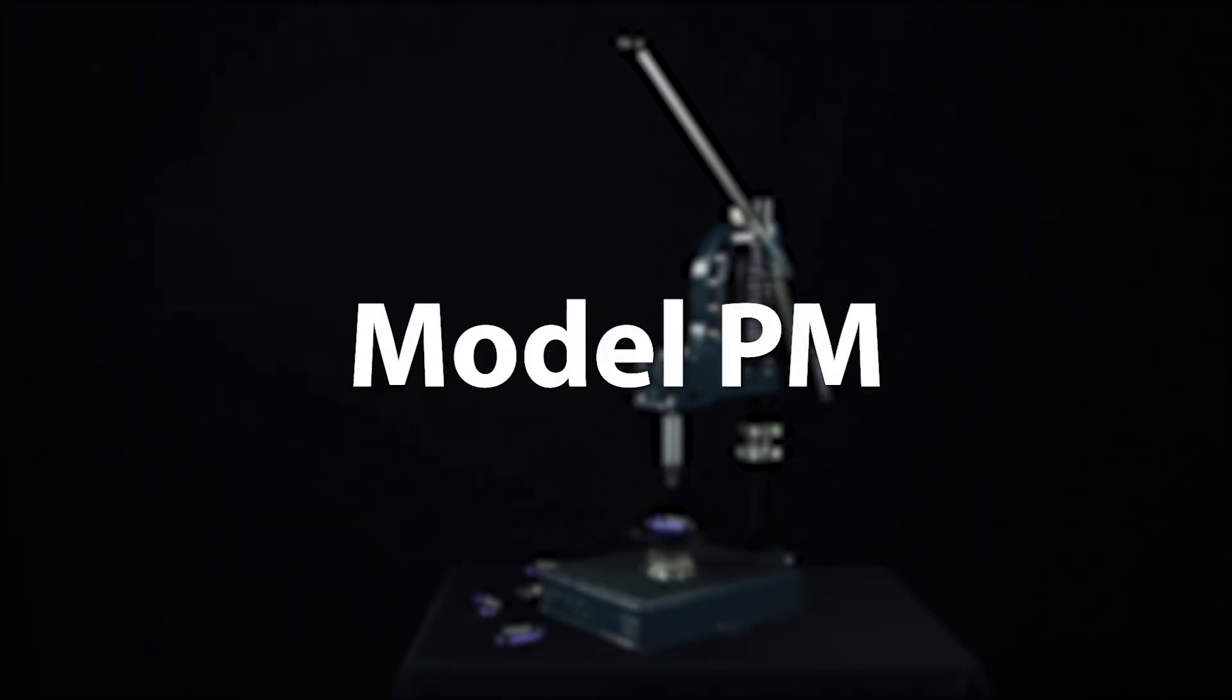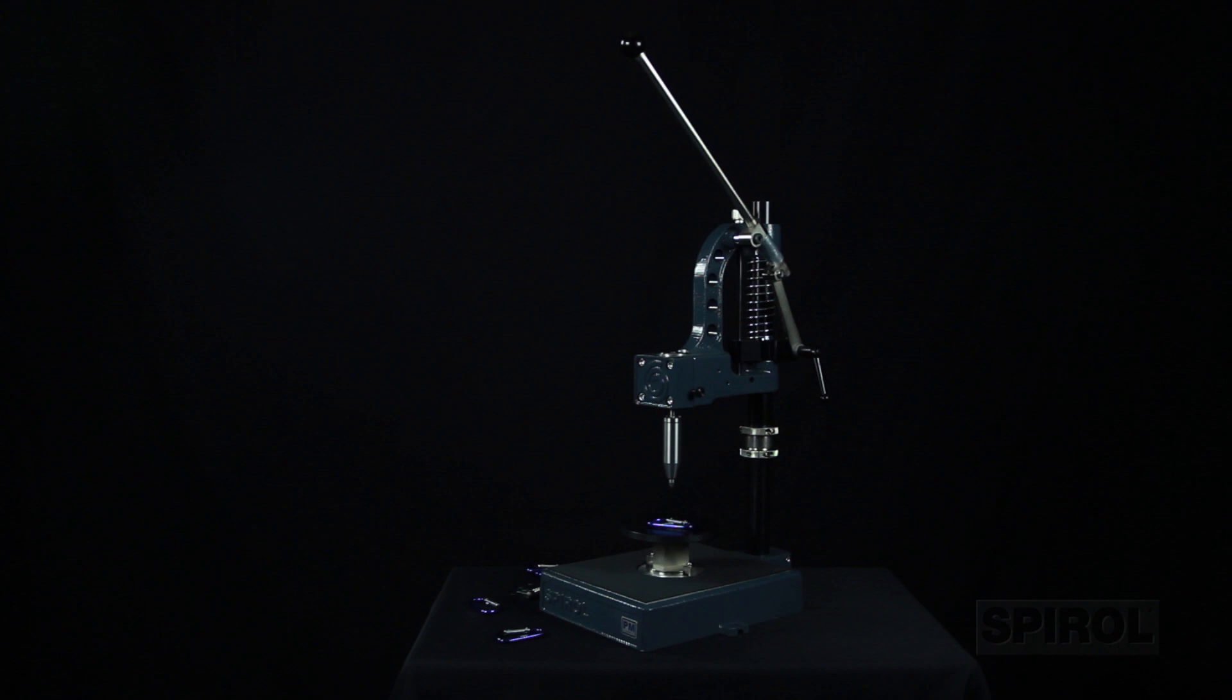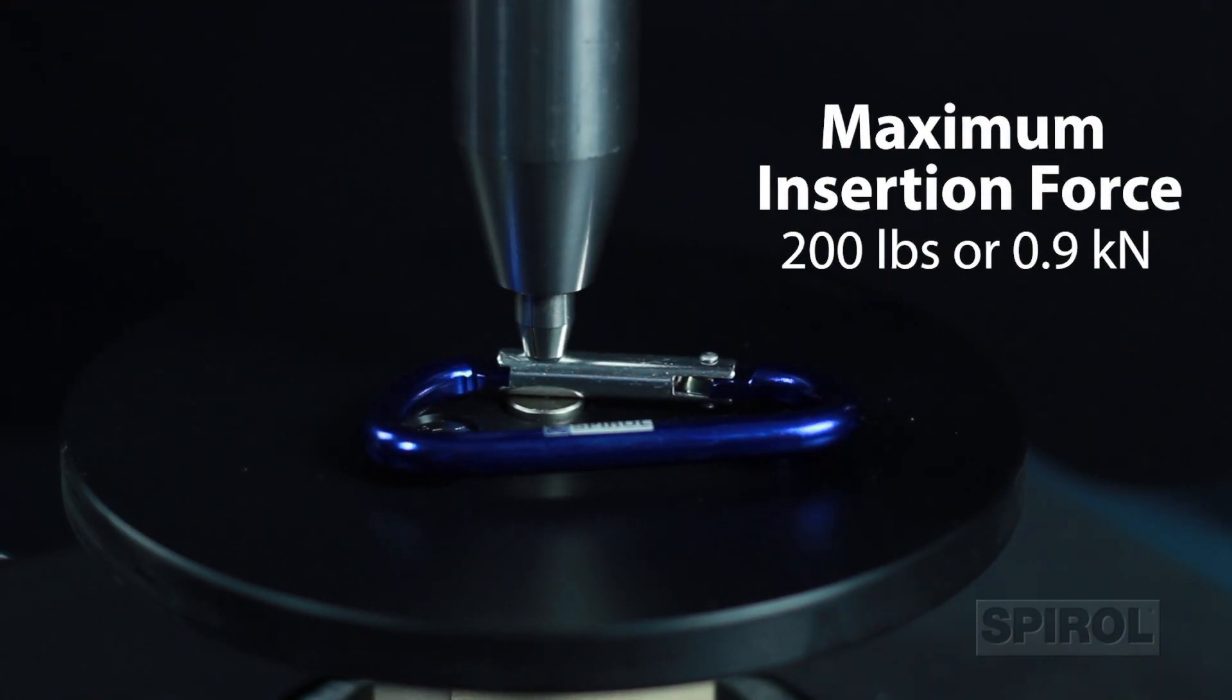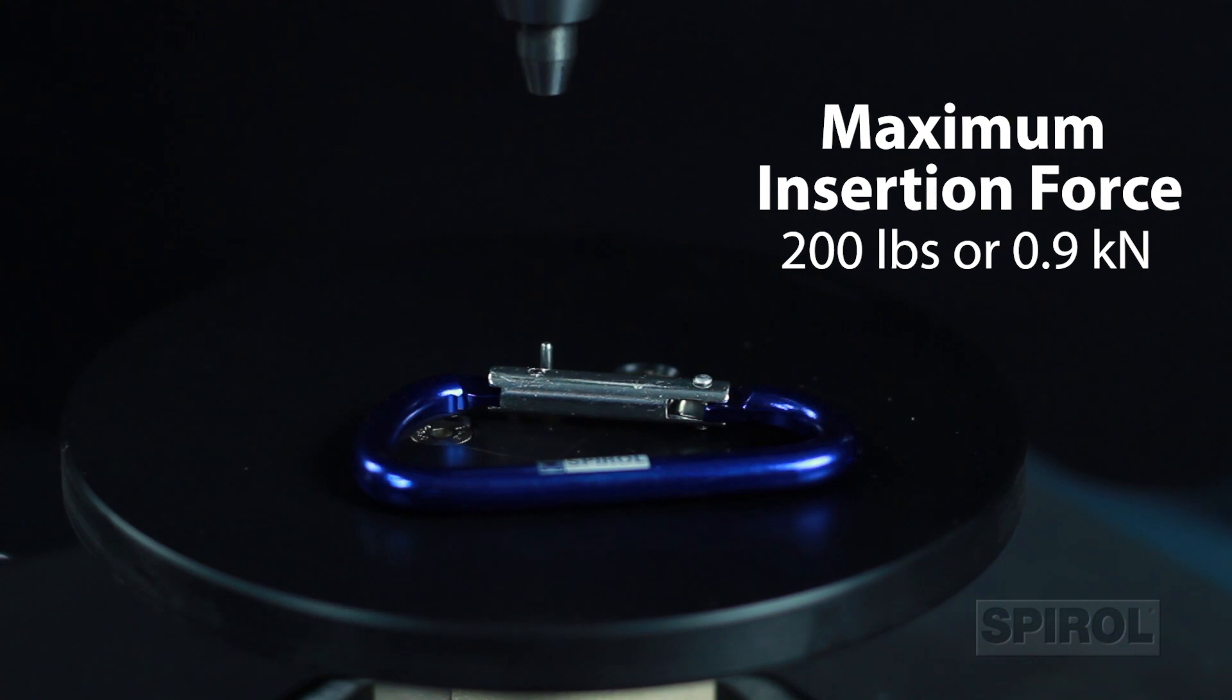Introducing Spiral's model PM vertical manually operated installation machine. The maximum insertion force of the model PM is 200 pounds or 0.9 kilonewtons.